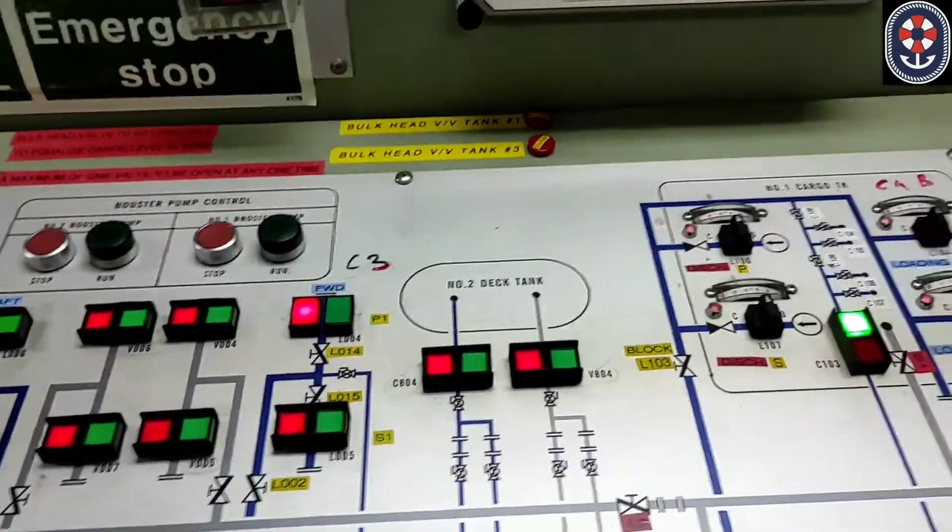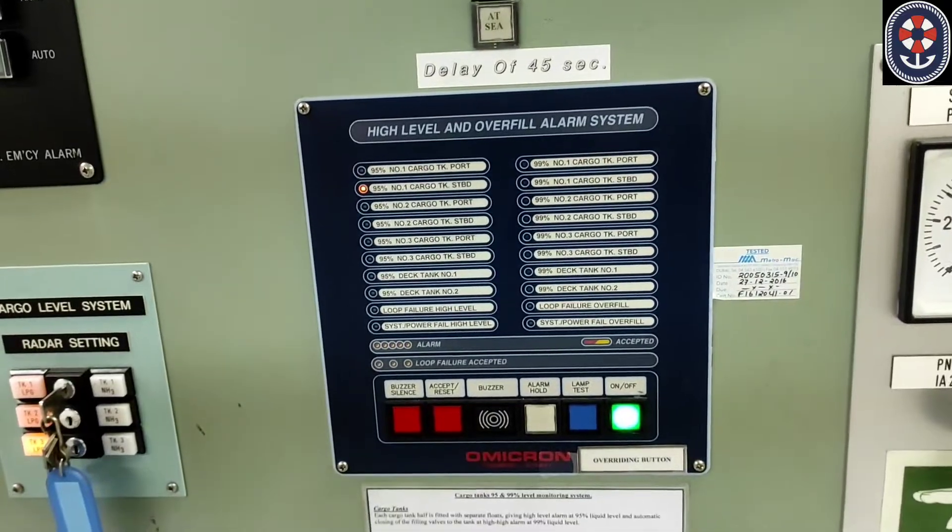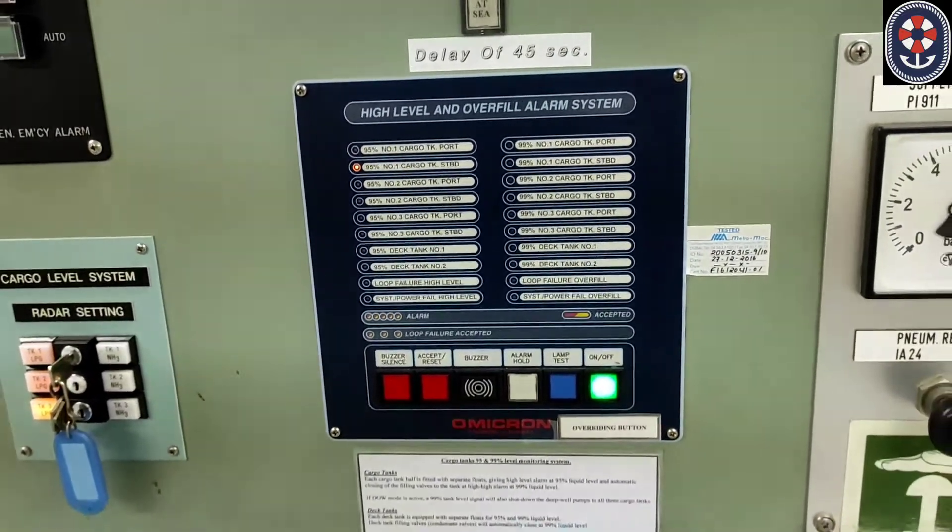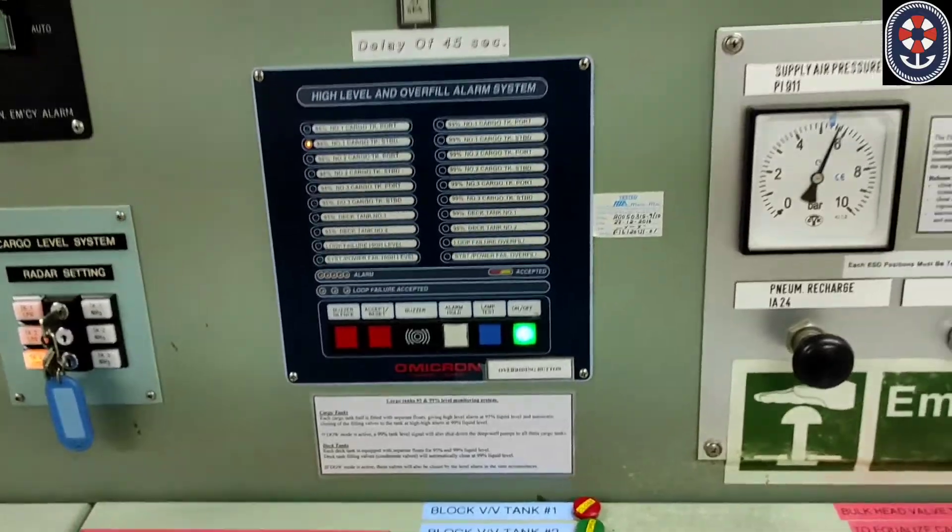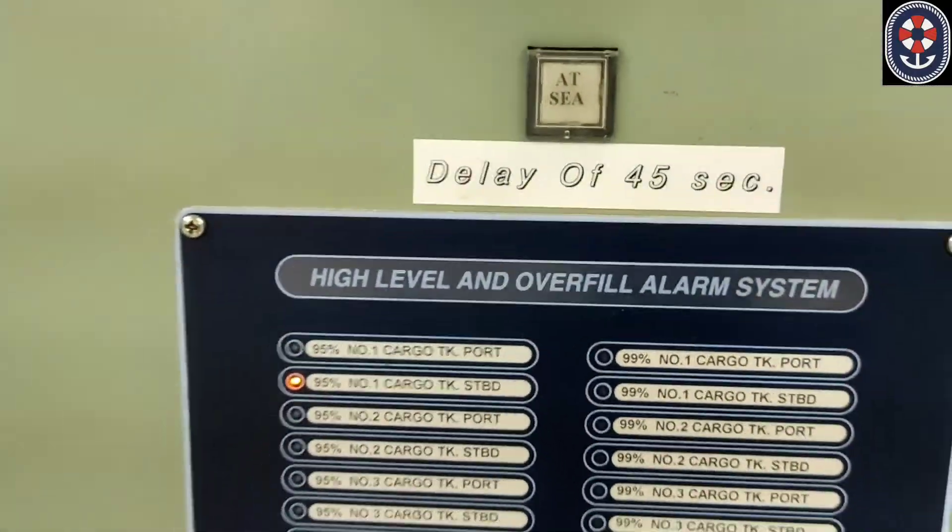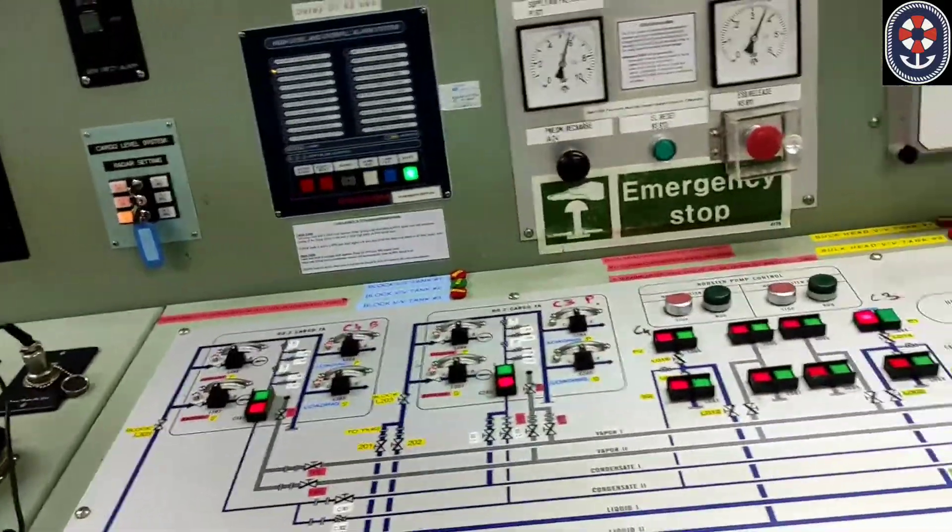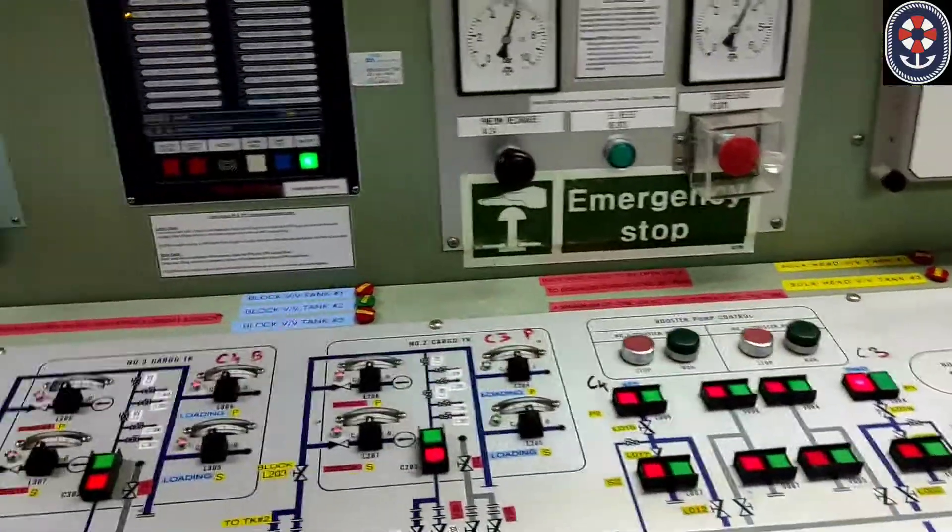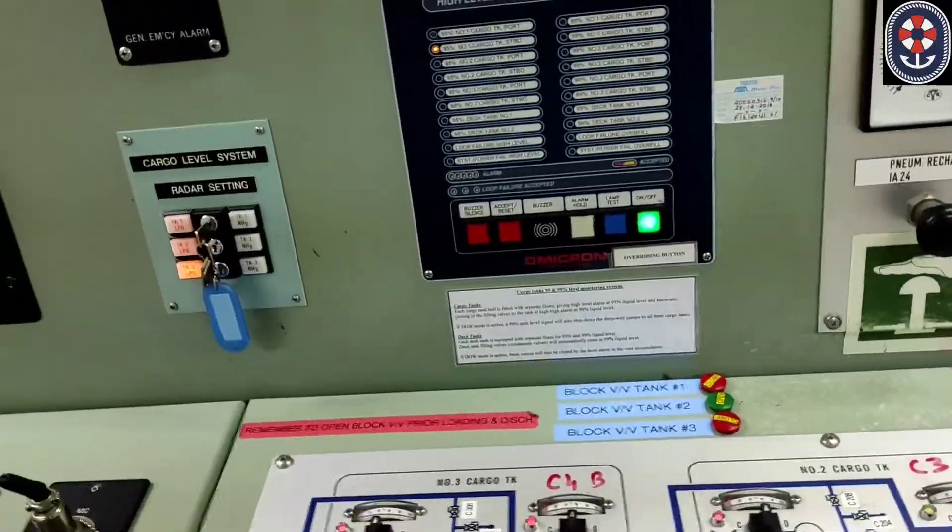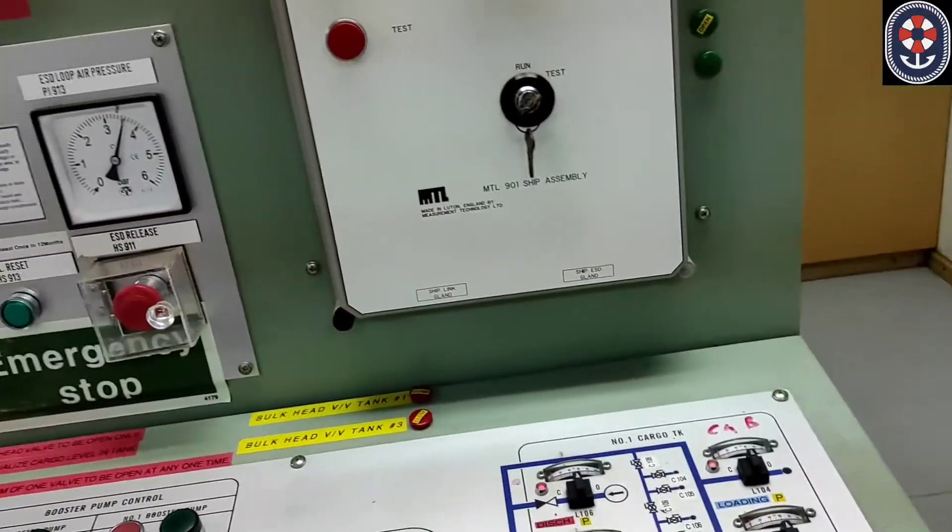And then you can find here for tank level gauge: 99 percent, 98 percent alarm, and this is the setting. Then we have also a setting here. At sea, when you switch it to at sea, it will give alarm after there is a delay of 45 seconds. When you are at sea, so that during rolling, it will not give this much alarms. And if you go further, we can see emergency test shutdown system.